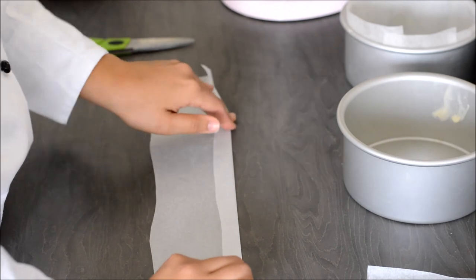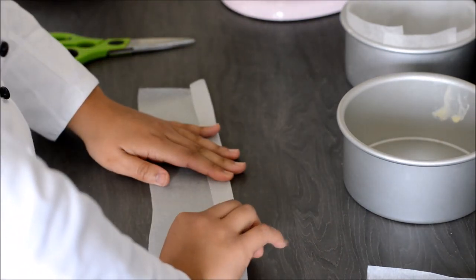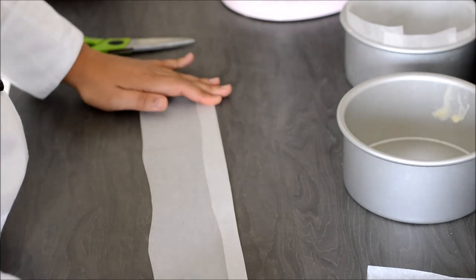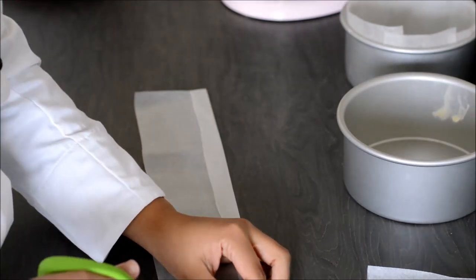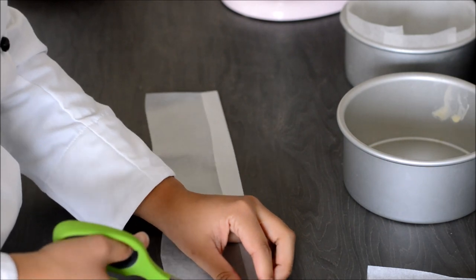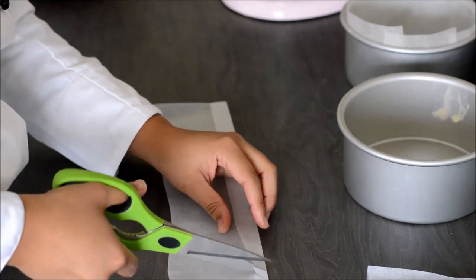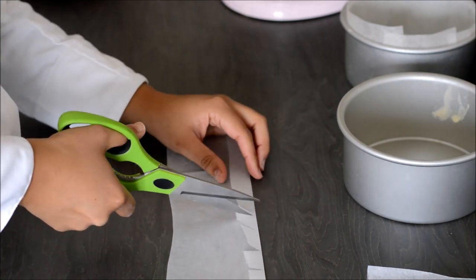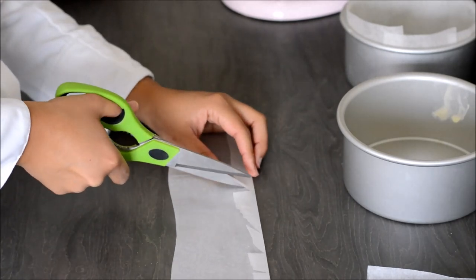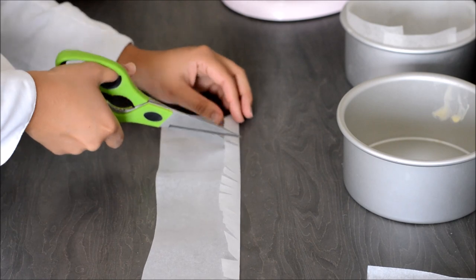we just want to about a centimetre and a half, overlap this and we're going to cut what I like to call little teeth about five millimetres or centimetre apart. There's not really too much method to this but this will just make sure that it doesn't crease when you wrap it into the pan and it fits down really nicely.